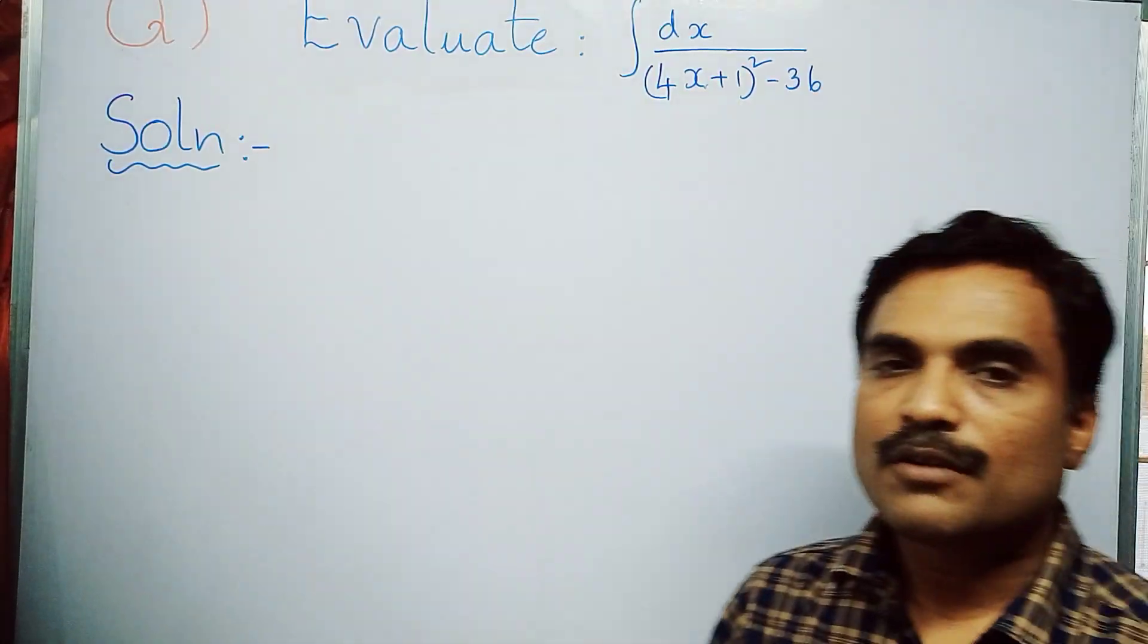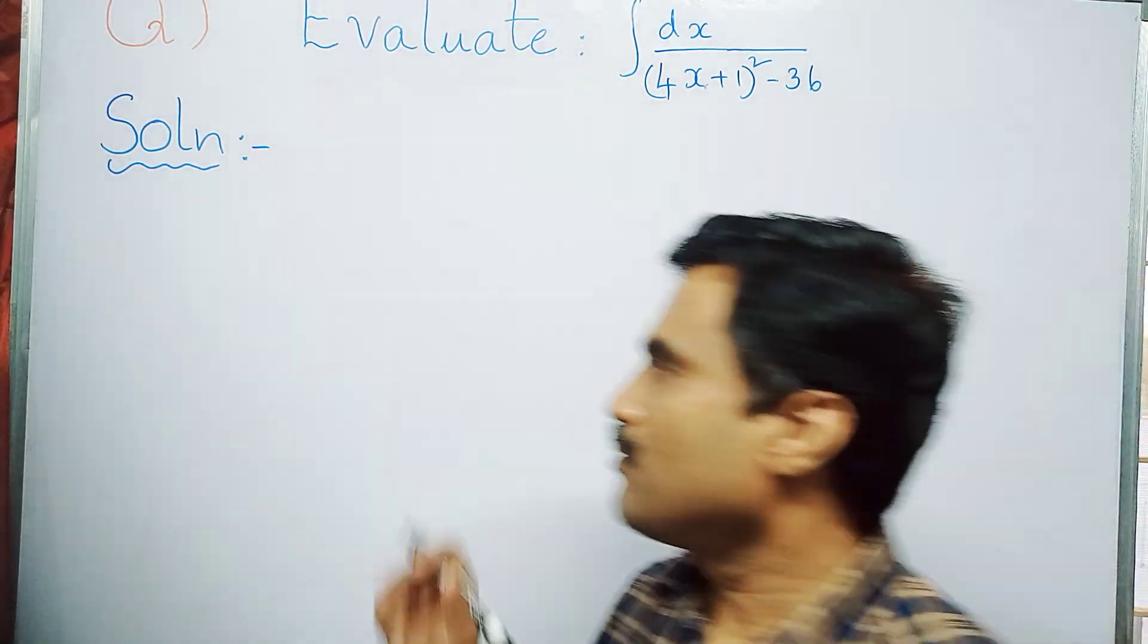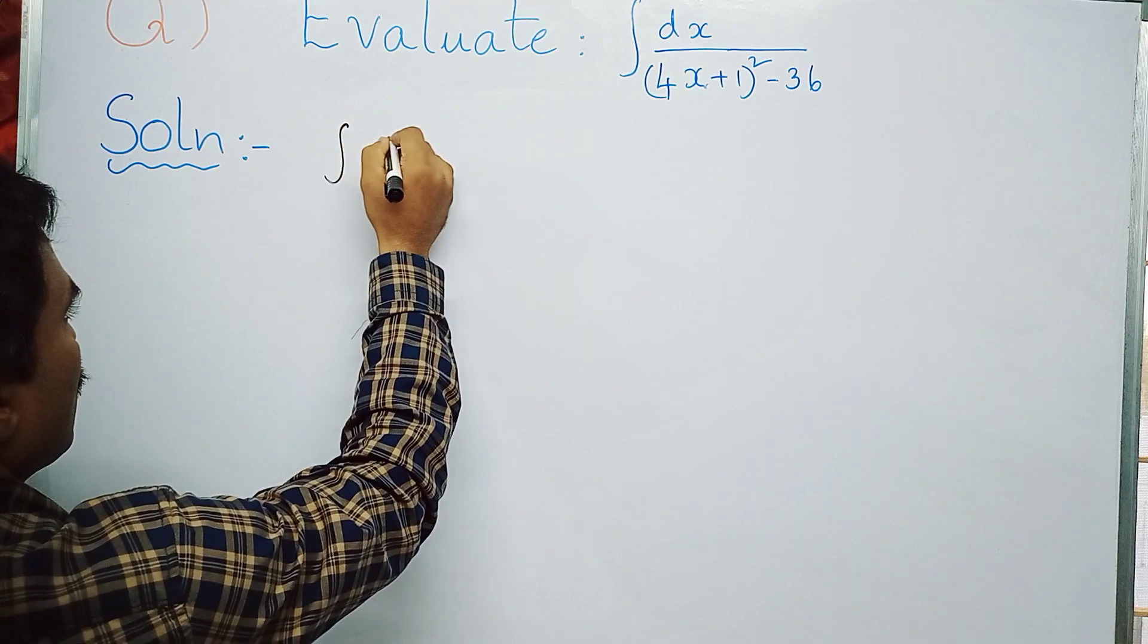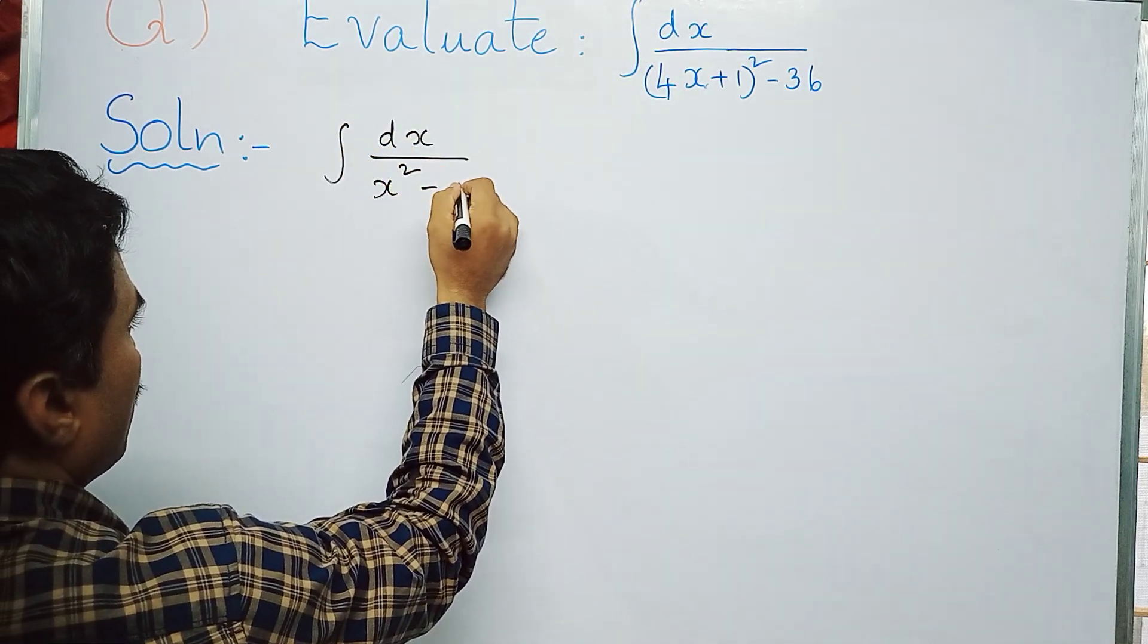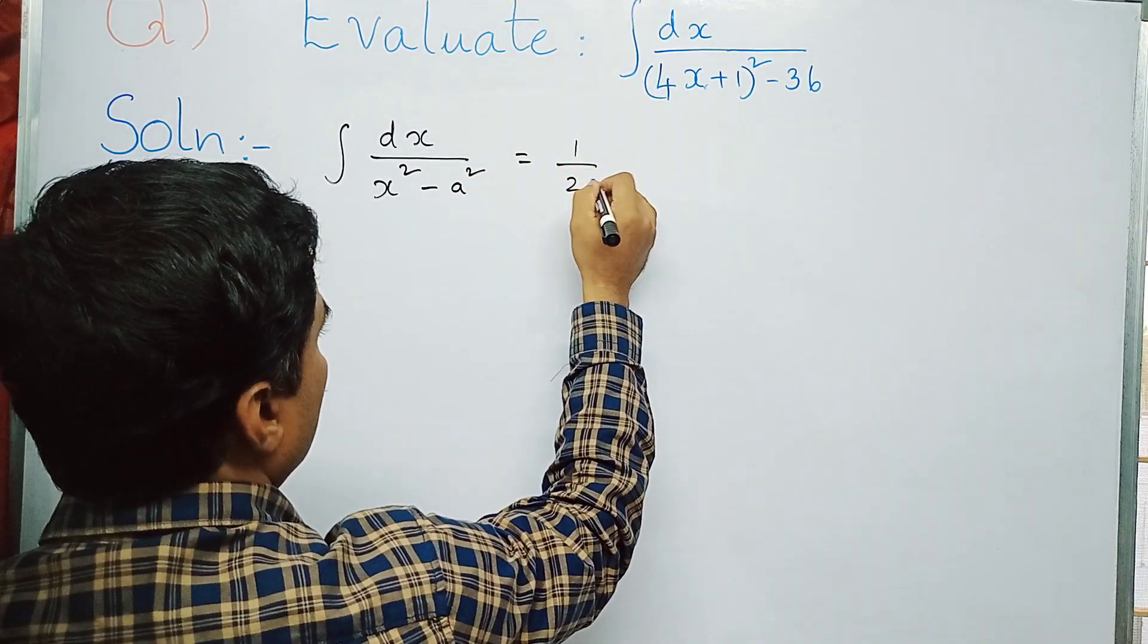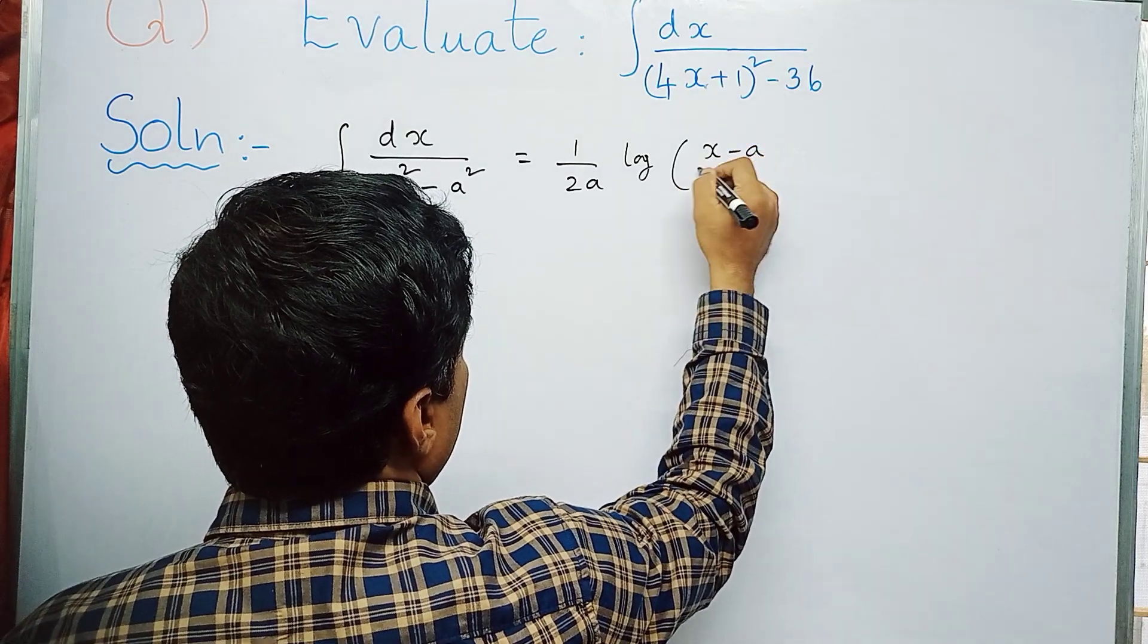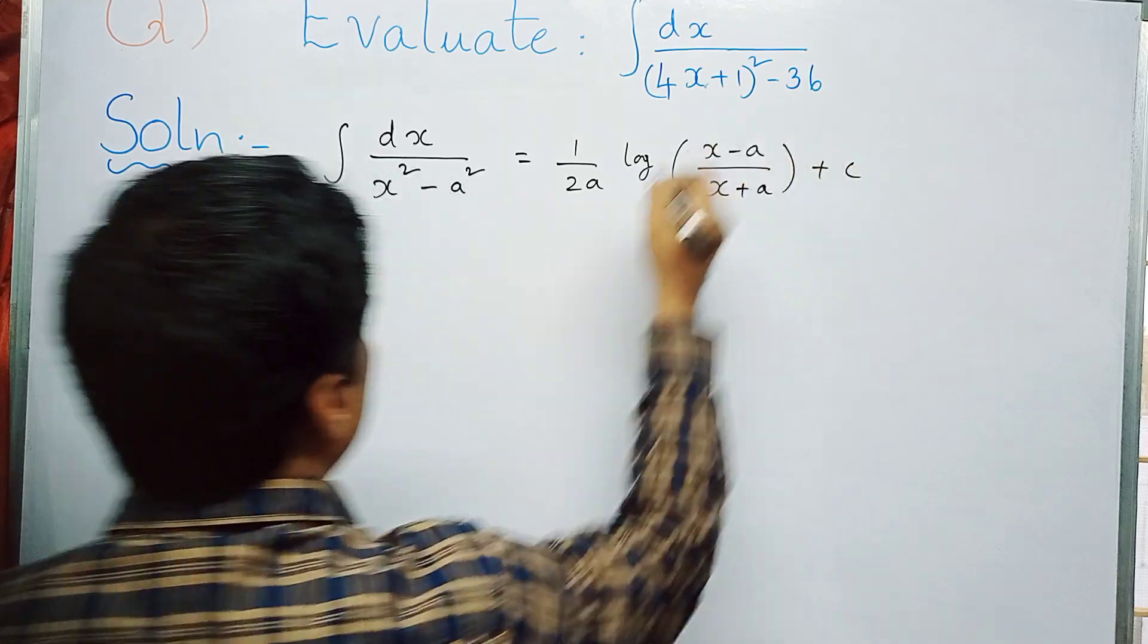So first we write that formula here. We know that integral dx by x² - a² can be written as 1 by 2a log of (x - a) by (x + a) plus c. Now, as I told you, in the denominator I will take 4x + 1 as u.